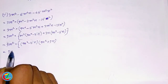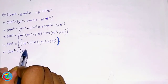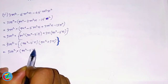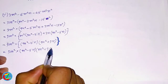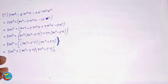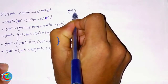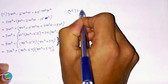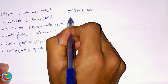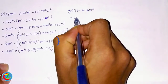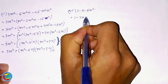The answer will be the answer. Here the answer will be m squared into m squared minus 5n into m squared plus 3n. The next answer will be 1 minus x minus 6x squared, giving the answer 6x squared.